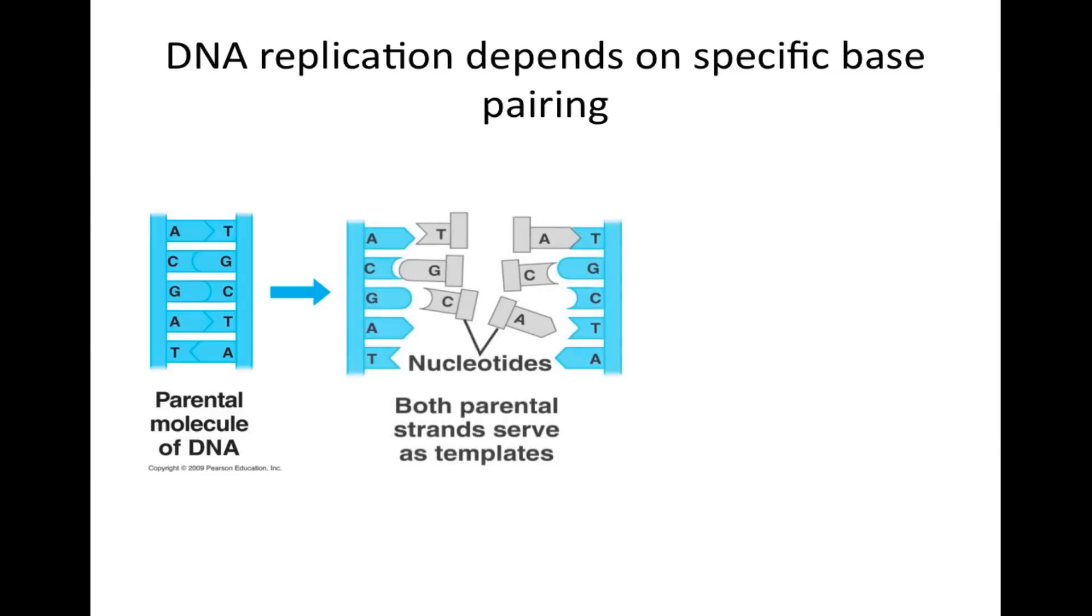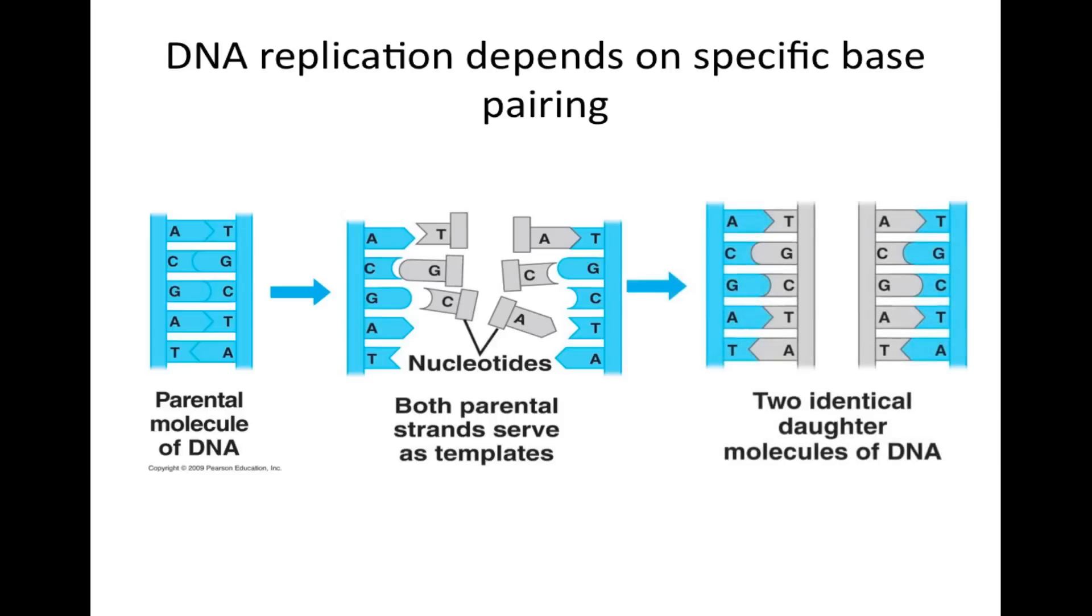DNA replication depends on specific base pairing. The parental molecule of DNA is a representation of a two-dimensional double helix. In DNA replication, the parental molecule unwinds so that both parental strands serve as templates. Molecules then have the opportunity to add the new base pairs to make a new DNA molecule, with both having one new strand and an old strand that was used as a template.